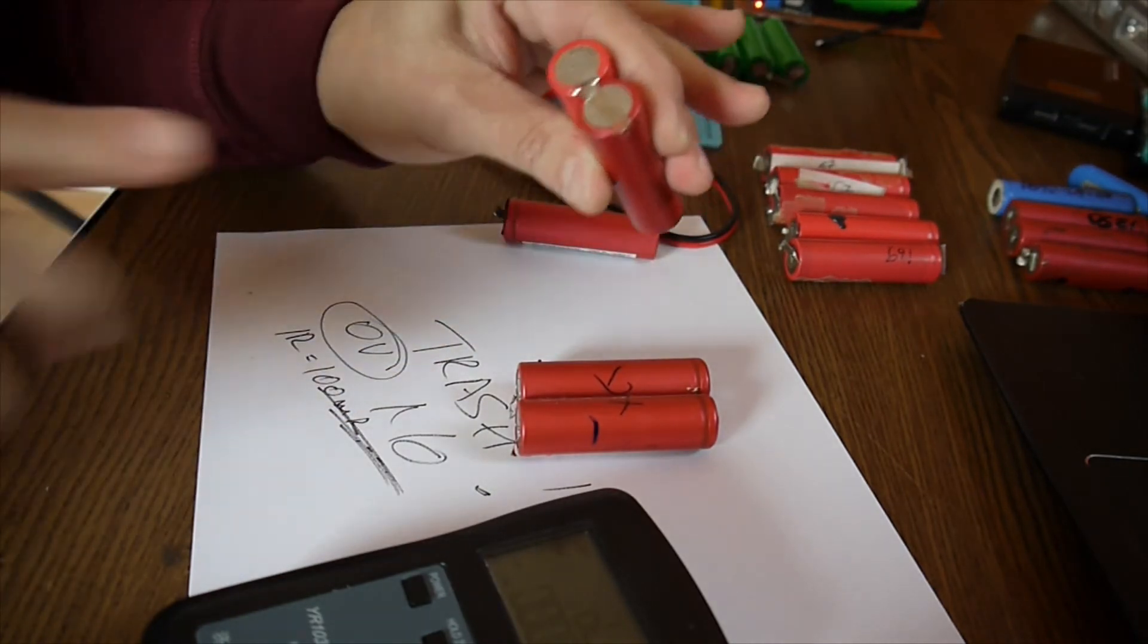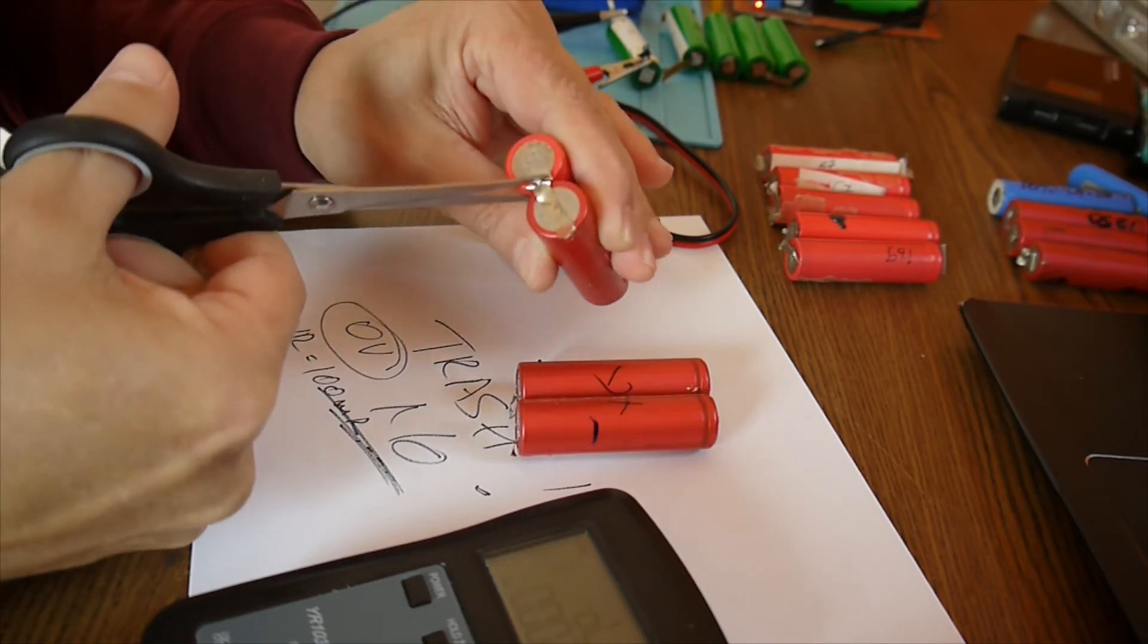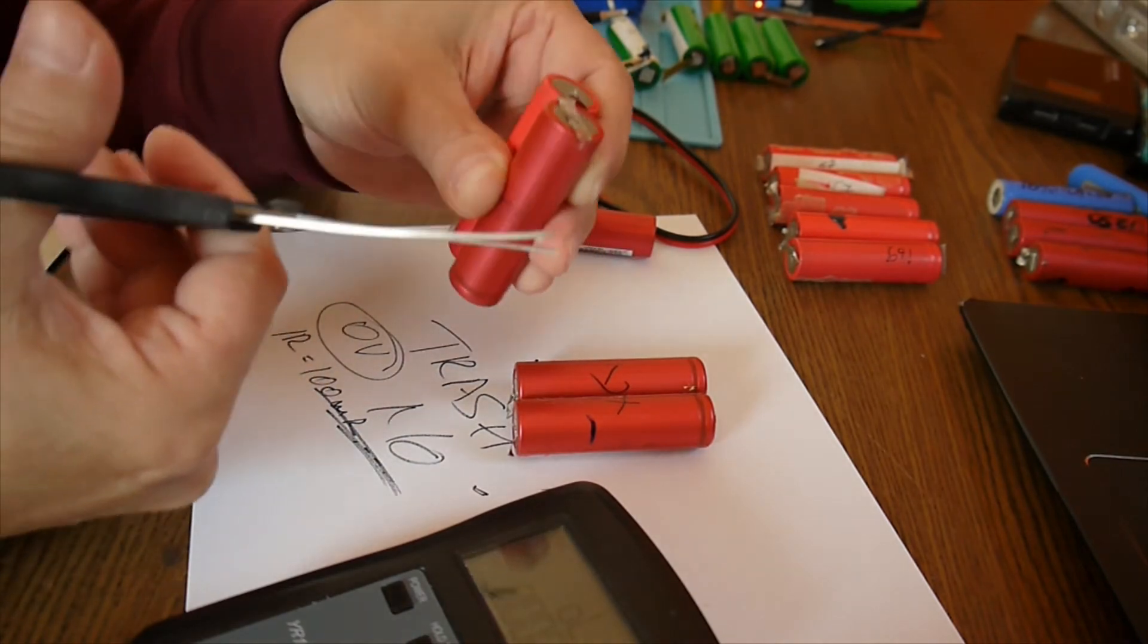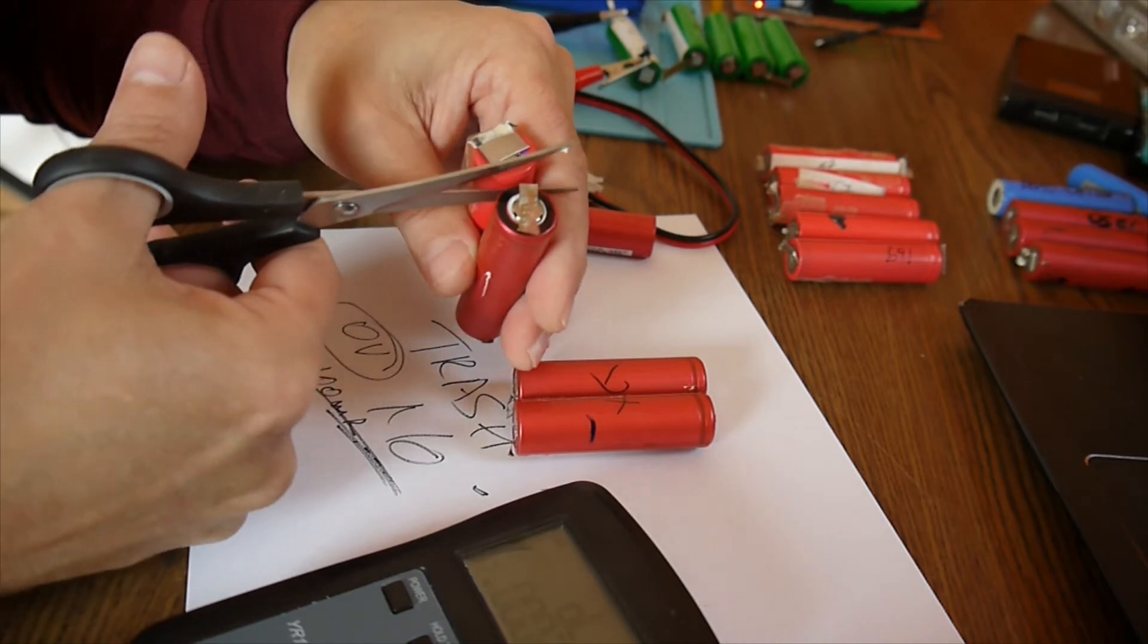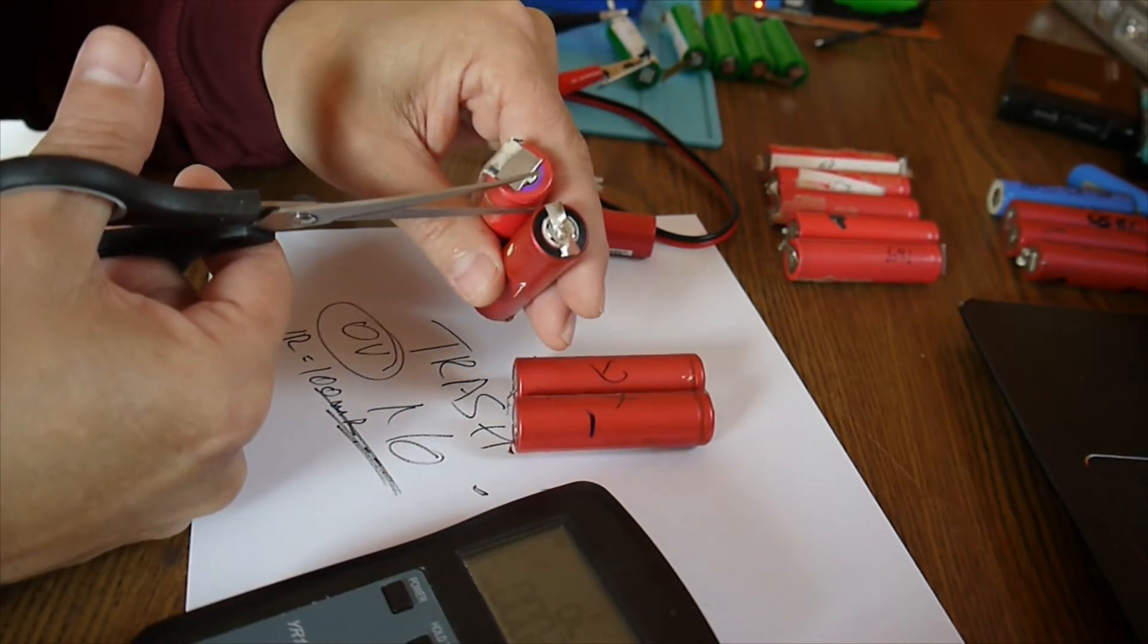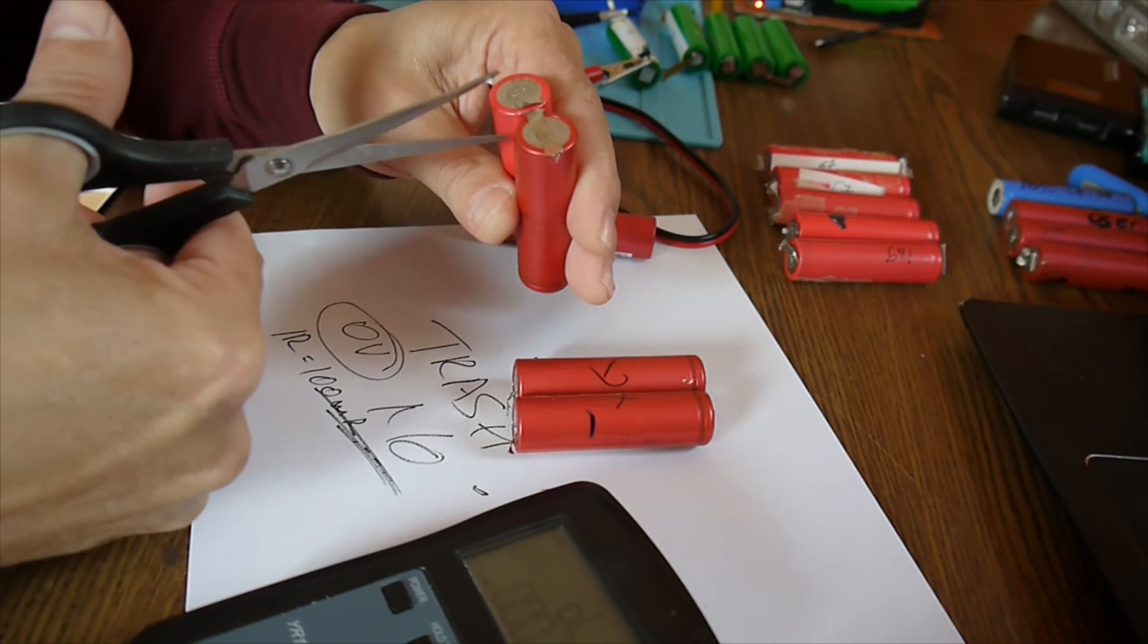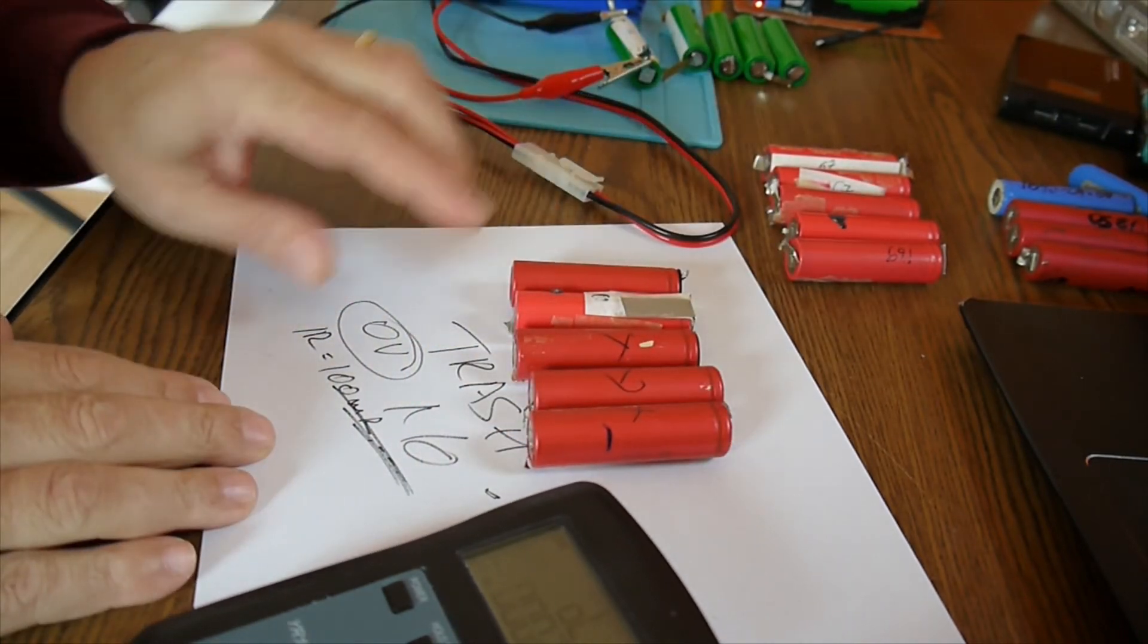I showed you in the other video, let's say we have two like this in parallel: minus, plus. When you cut them, you always start with minus. Why? Because even if you break the plastic here, the isolation, nothing wrong can happen. This is minus to the body. If you go here the first time, when you put the knife or the scissors, it's very possible to hurt the plastic and then you're going to have a short for sure. So when it's like this in parallel, always start with minuses.